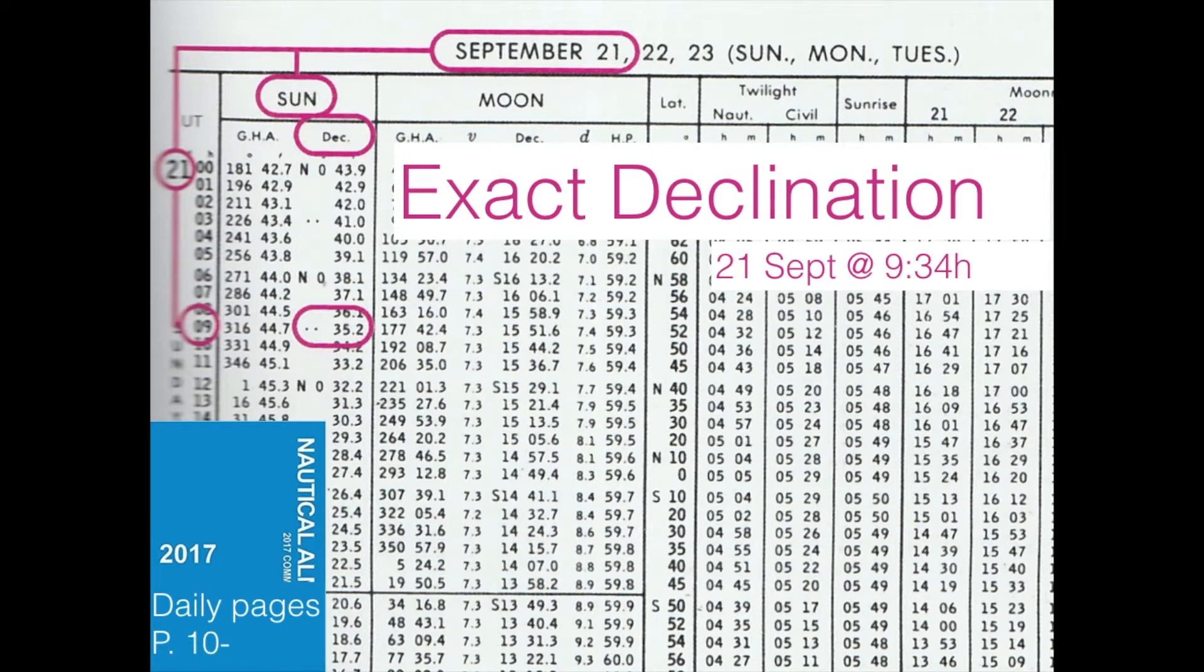So in this example, you want to know what's the declination on the 21st of September at 9:34. So you open up the daily pages on the 21st of September, and then on the very left, you look at nine hours. That's the full hour. And at nine hours, you then move two columns to the right, and look at the sun's declination.